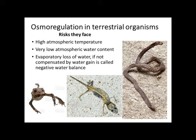Negative water balance means water loss is higher than water gain. This is a dangerous situation and it will push the animal to the risk of dehydration or desiccation. To avoid this danger, terrestrial animals have certain specializations to conserve water and thereby reduce water loss. So we will go to some of their osmoregulatory adaptations.